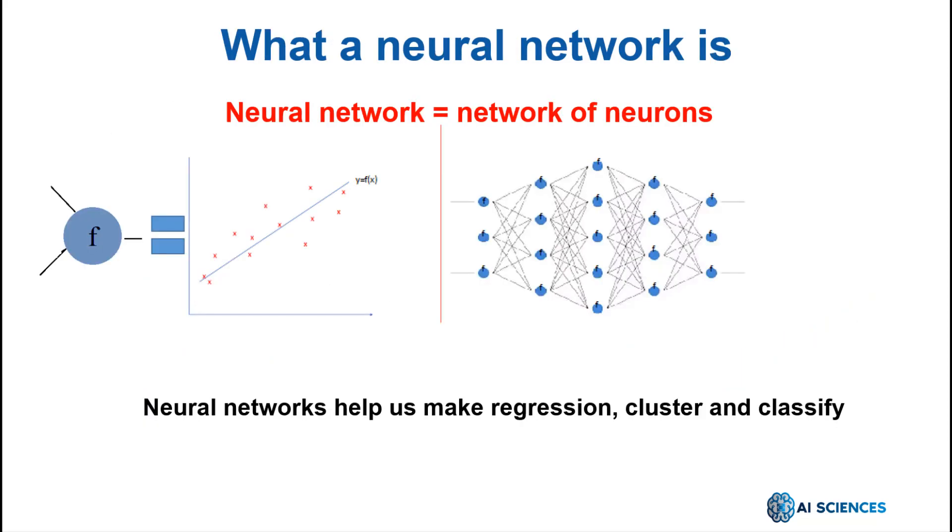Now, let's see what a neural network is. Well, in one sentence, a neural network is a network of neurons. It means that we have many neurons and all their inputs and outputs are intertwined and they feed each other. In this figure, you can see the difference between a neuron and a neural network. As you can see, a neuron is a basic unit of learning and a neural network is a bunch of interconnected neurons.